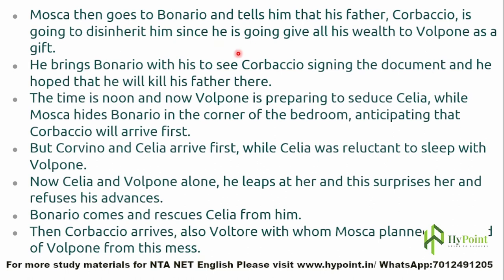By telling Bonario about his father's plan, Mosca brings him to Volpone's house to witness Corbaccio signing the documents. Mosca's hope is that upon seeing this, Bonario will be enraged and kill his father — and since Corbaccio already signed the document leaving his wealth to Volpone, Volpone would inherit and also be rid of one legacy hunter. By noon, Mosca has already informed Volpone that Corvino has given his consent for Celia, and Volpone is preparing to seduce her.